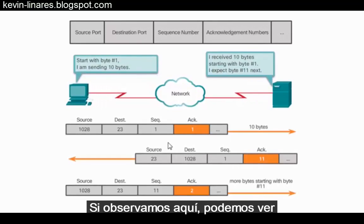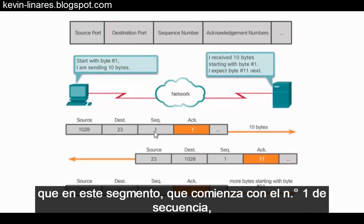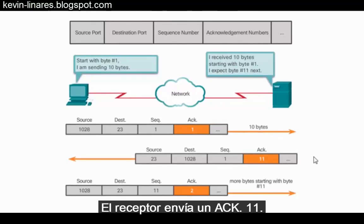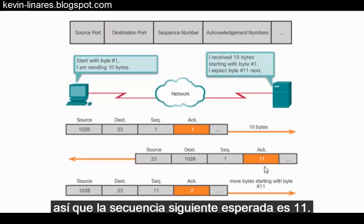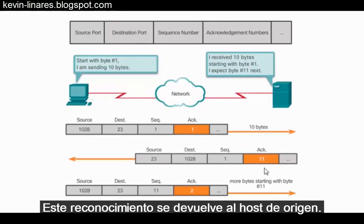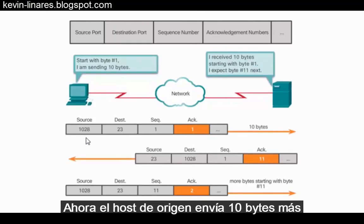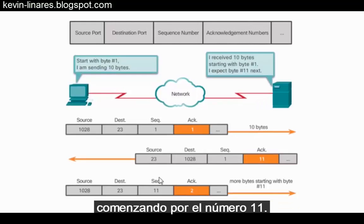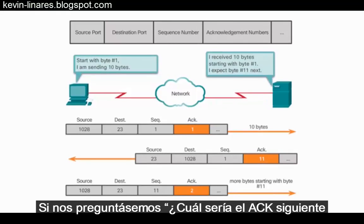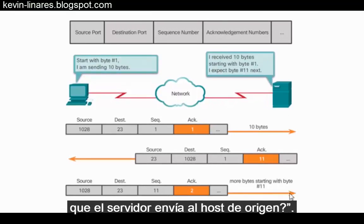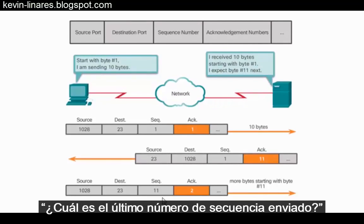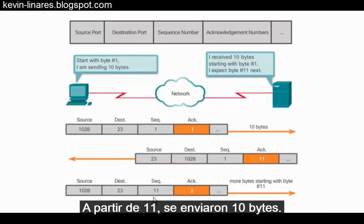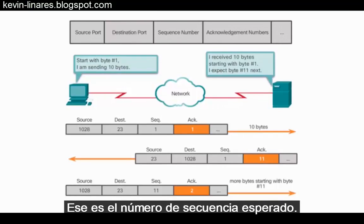Looking at the diagram, we can see that in this segment, starting with sequence number one, 10 bytes have been sent. The receiver sends an ACK 11 — starting with one, 10 bytes were sent, so the next sequence number it's expecting is 11. This acknowledgement is sent back to the originating host. Now the originating host sends 10 more bytes starting with sequence number 11. To determine the next ACK the server sends back, we ask: what's the last sequence number sent? Starting with 11, 10 bytes were sent, so the last sequence number sent was 20, making the ACK an ACK 21 — that's the next expected sequence number.